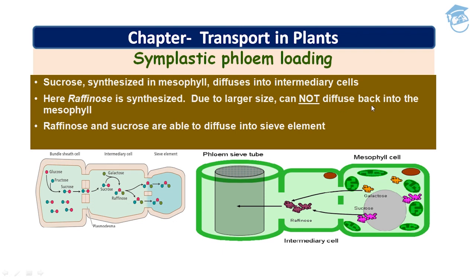As seen in the longitudinal section of the phloem sieve tube, glucose and fructose from the mesophyll cell form sucrose, which moves to the intermediary cell. Galactose also diffuses into the intermediary cell, and sucrose plus galactose forms raffinose. Raffinose then diffuses to the sieve tube element of the phloem. Only raffinose and sucrose are able to diffuse into the sieve tube element.